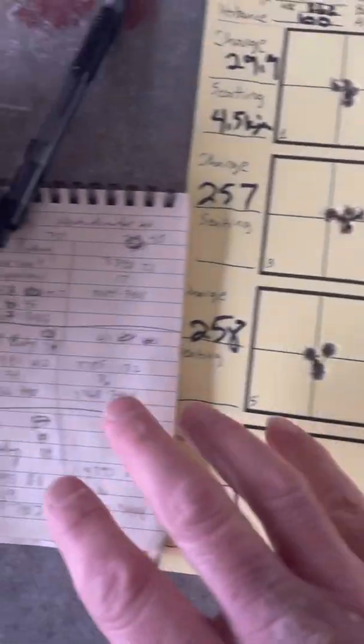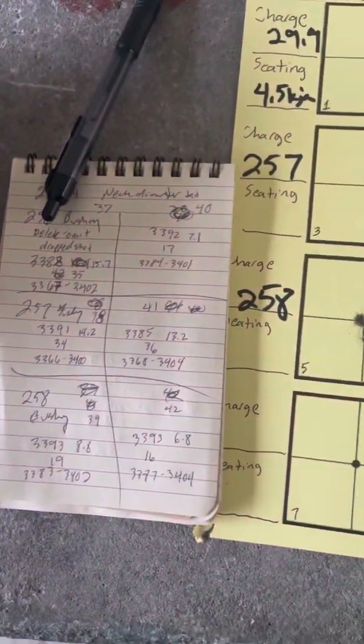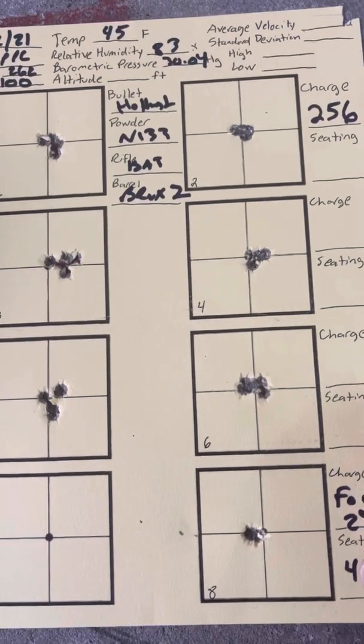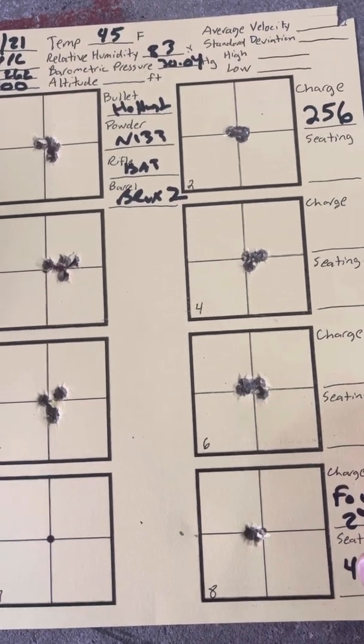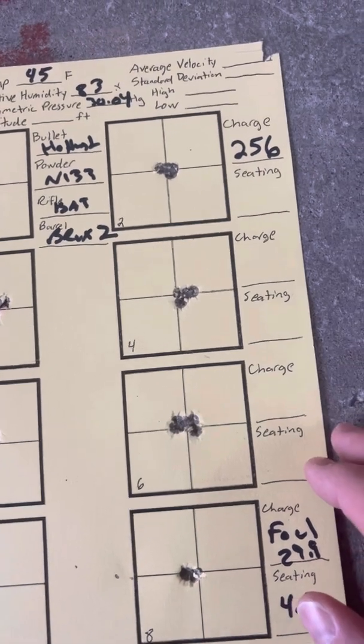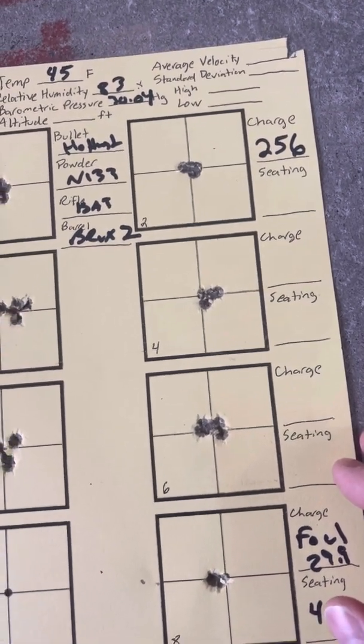So velocity is all about the same. I don't really see anything that jumps at me there. So that is the test. Definitely the old saying about more neck tension with N-133 seems to be true according to this test.